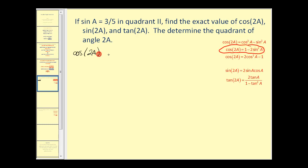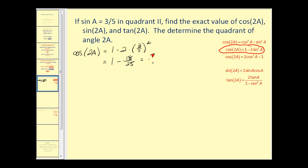Using the identity one minus two sine squared A: if sine A is three-fifths, we have one minus two times three-fifths squared. Three-fifths squared is nine twenty-fifths, times two gives eighteen twenty-fifths, so one minus eighteen twenty-fifths gives us seven twenty-fifths for cosine two A.